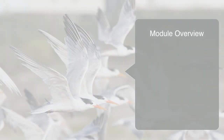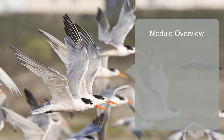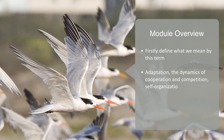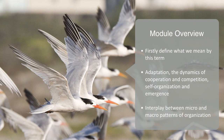In this module, we will be giving an overview to complex adaptive systems. We will firstly define what we mean by this term, before briefly covering the main topics in this area as we talk about adaptation, the dynamics of cooperation and competition, self-organization, and emergence. Finally, we will look at the complex interplay between the micro and macro patterns of organization that is a core feature to these systems.